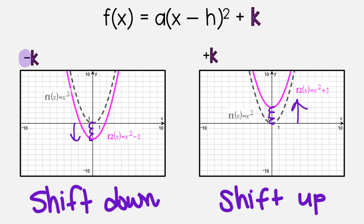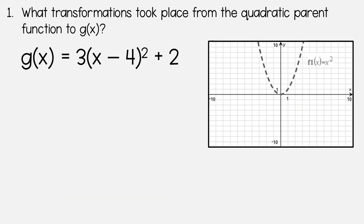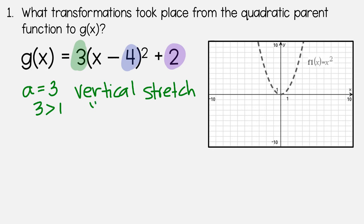So now let's do examples. This one says, what transformations took place from the quadratic parent function to g of x? So every time you see a number, we're going to say, what does that number mean? So this 3, this 4, and this 2. It is basically going in order. A is 3. And since 3 is bigger than 1, this is going to be a vertical stretch. It's going to look narrower.